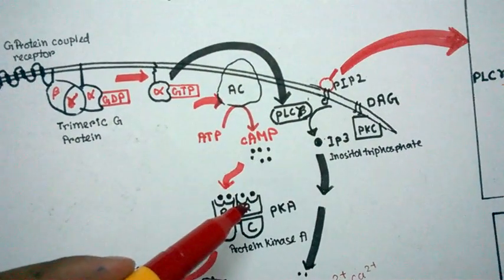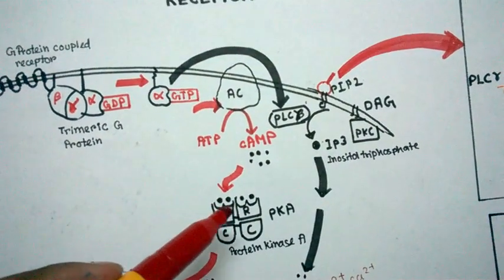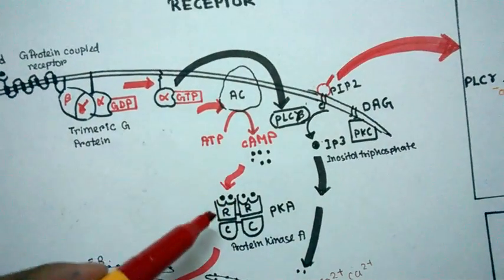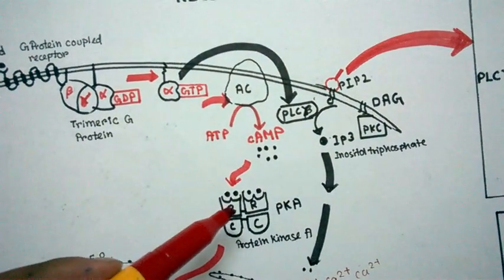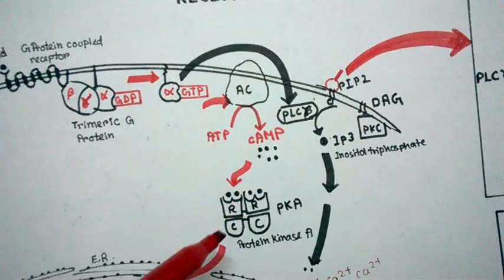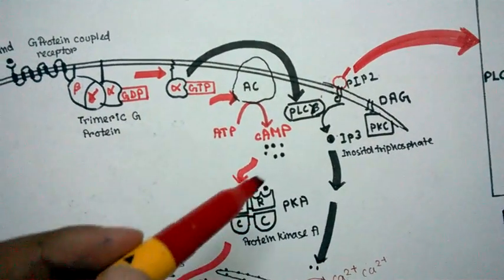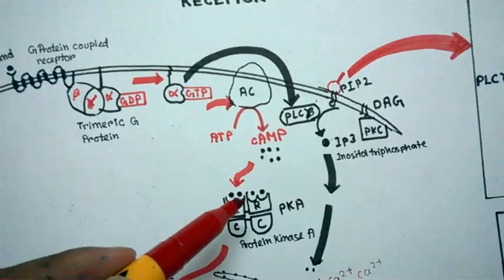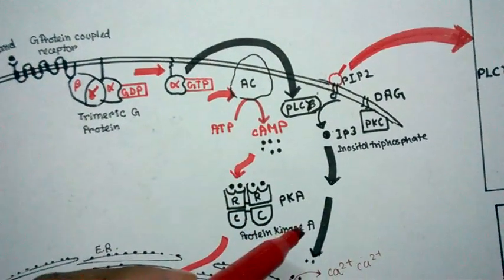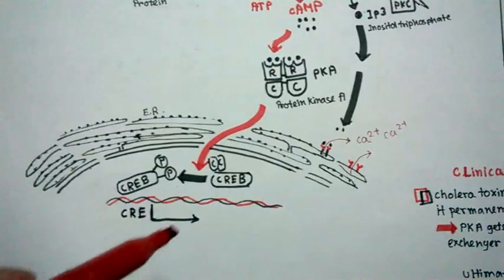Four cyclic AMP molecules bind to the regulatory domain of protein kinase A. Protein kinase A has four domains: two regulatory domains and two catalytic domains. Cyclic AMP binds to the regulatory domain and releases the catalytic domain, which migrates to the nucleus.